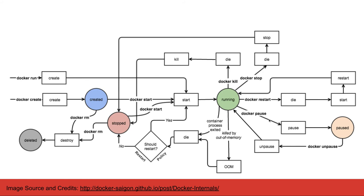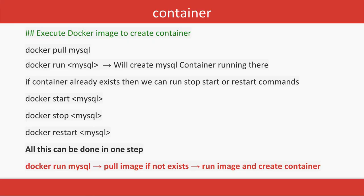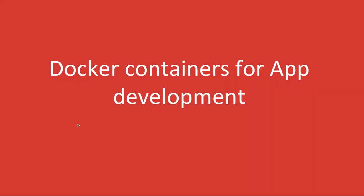For example, `docker pull mysql` — if the MySQL image is not available locally, it will pull it. You can also just run `docker run mysql`, which will pull the MySQL image and run it in one step. Then you can use `docker start`, `docker stop`, `docker restart`, and `docker images` to manage it.